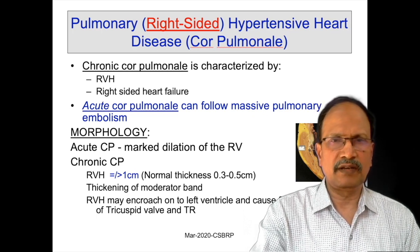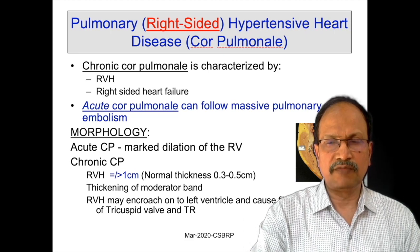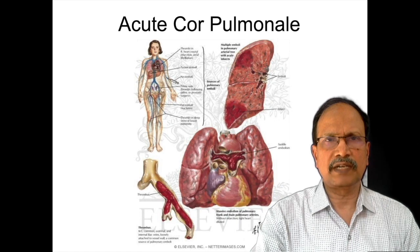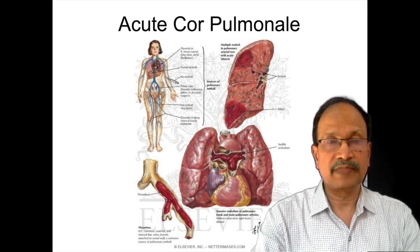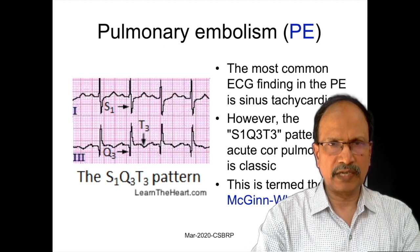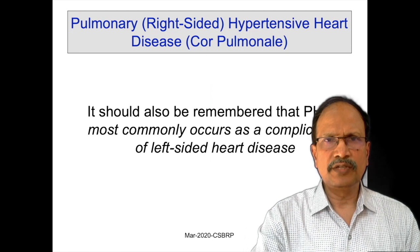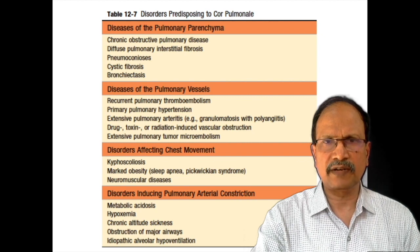The right ventricle encroaches onto the left ventricle and causes fibrous thickening of the tricuspid area and tricuspid valve, and may be associated with tricuspid regurgitation. A diagrammatic representation shows deep vein thrombosis progressing to the pulmonary artery, causing obstruction and infarction. Acute cor pulmonale may be diagnosed by ECG changes known as the S1Q3T3 pattern: deep S waves in lead 1 and deep Q waves with inverted T waves in lead 3.